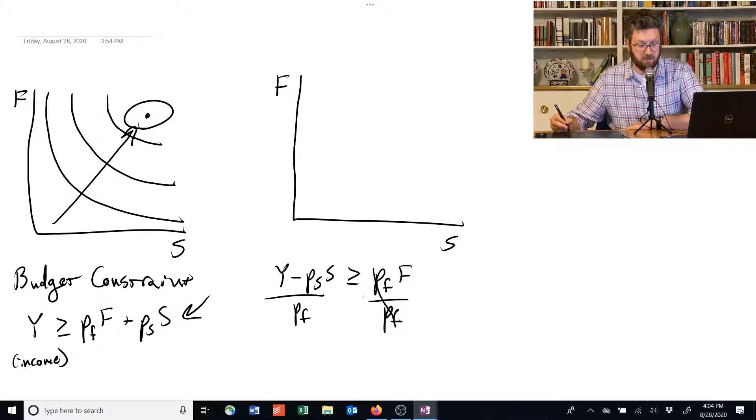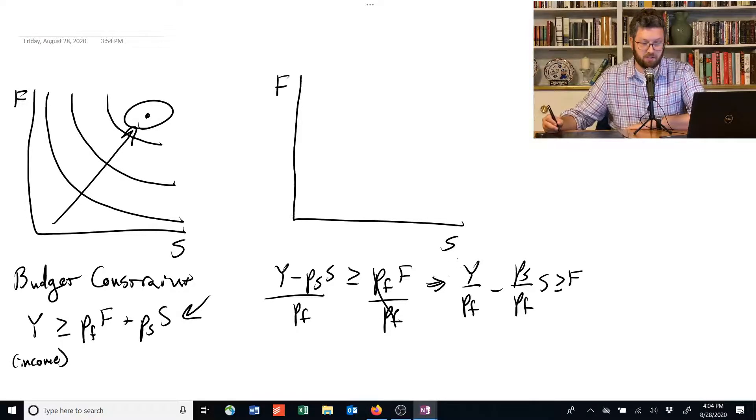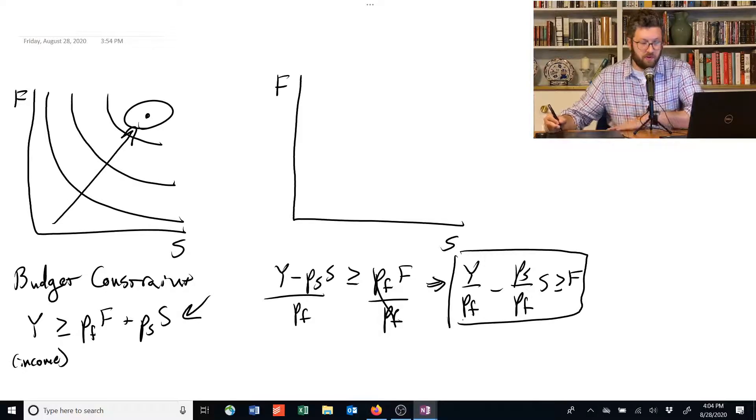They cancel over here, and we end up with this equation that Y divided by PF minus PS over PF times S is greater than or equal to F. This is our budget constraint expressed in a different way. It's the same equation, but we've just rearranged it.